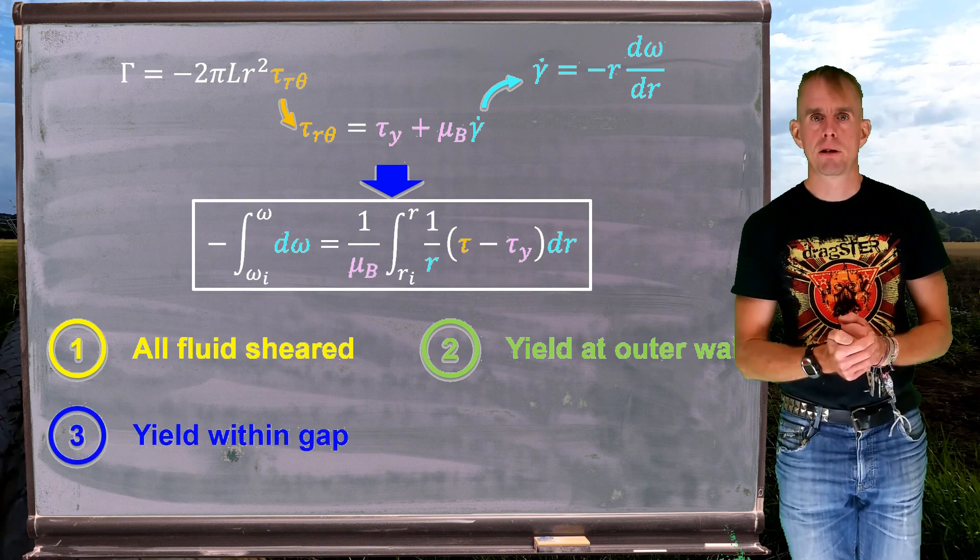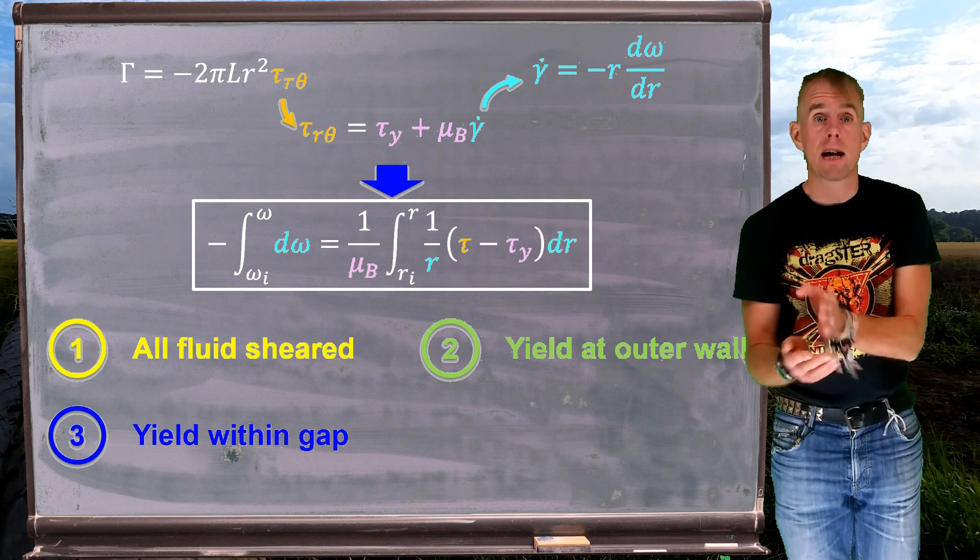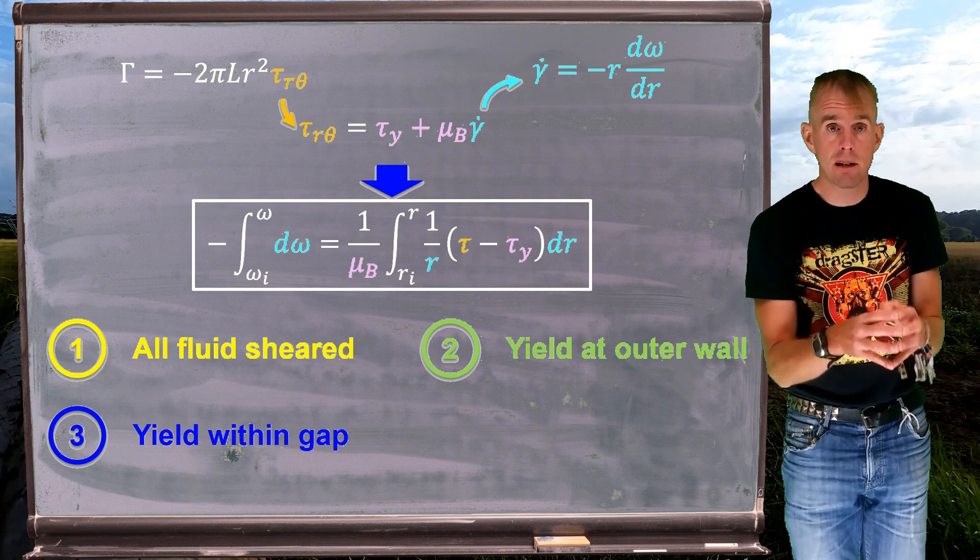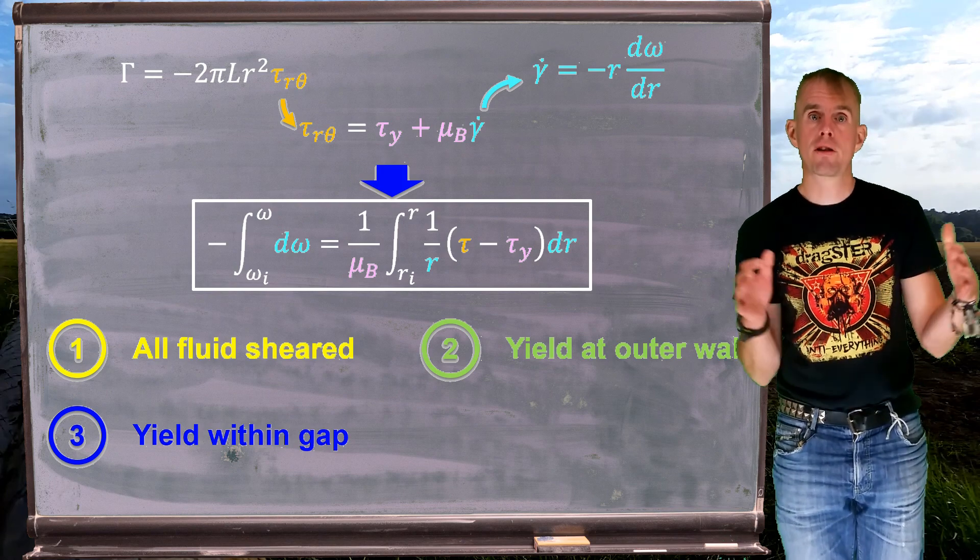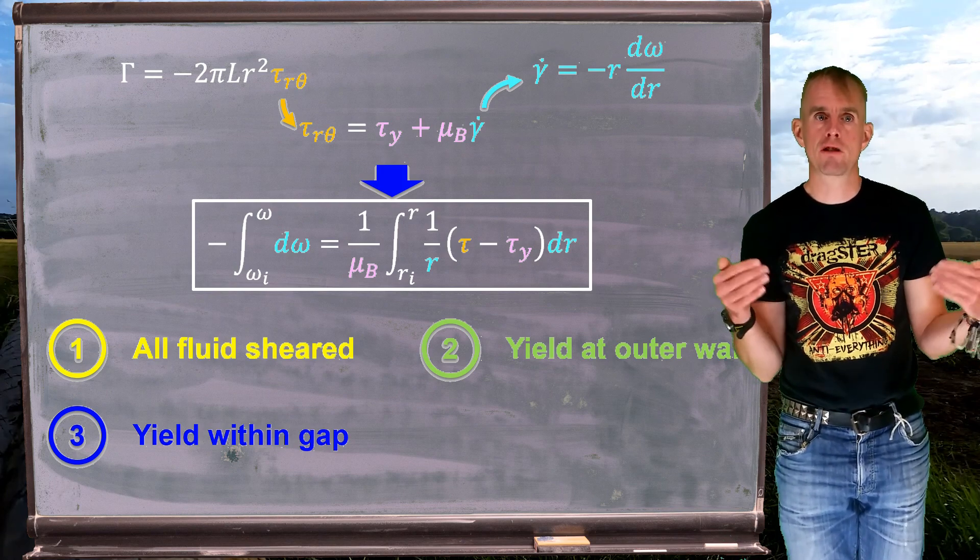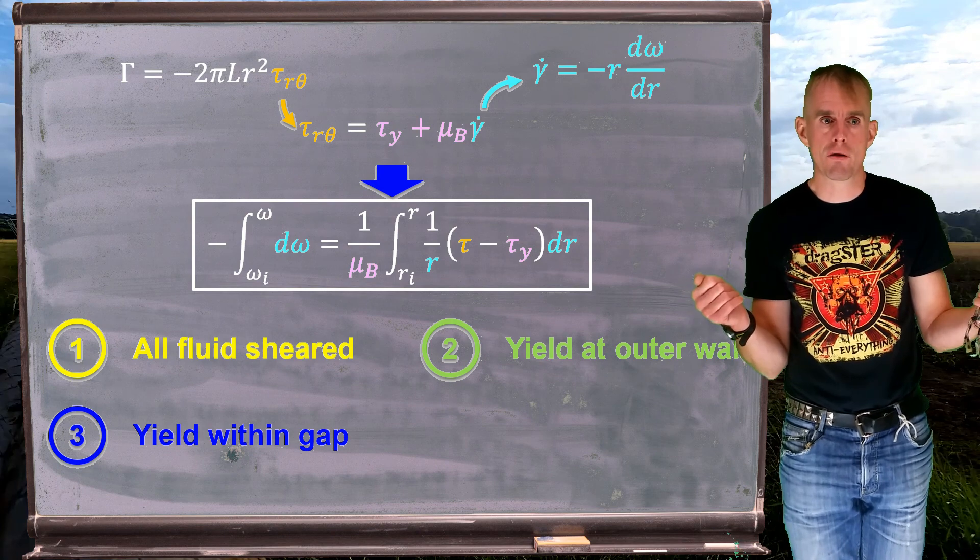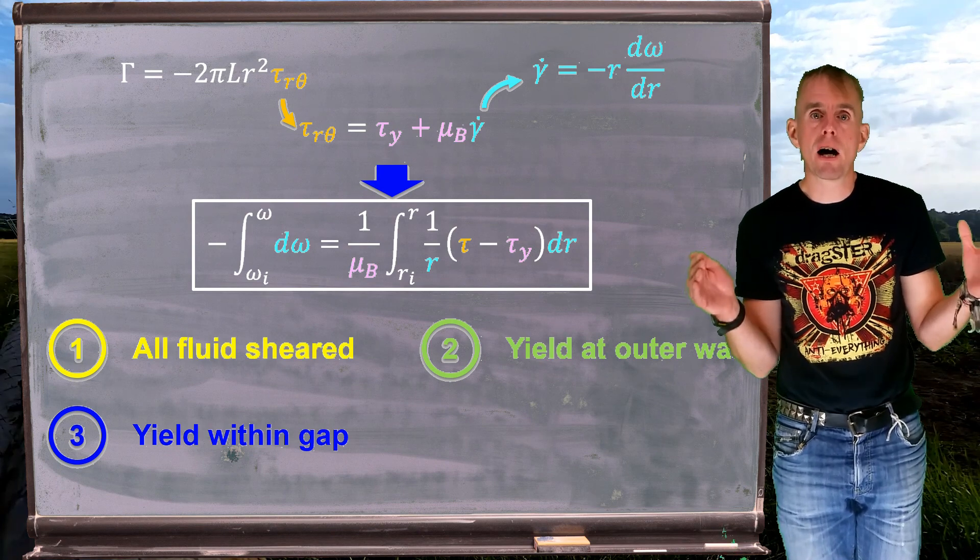Now, it can get a little more complex because the yield could occur somewhere in the gap. Somewhere close to the inner cylinder, where the shear rate is highest, we could have a yielded zone. And somewhere close to the outer cylinder, where the shear rates are low because, hey, it's stationary, there could be unyielded material.